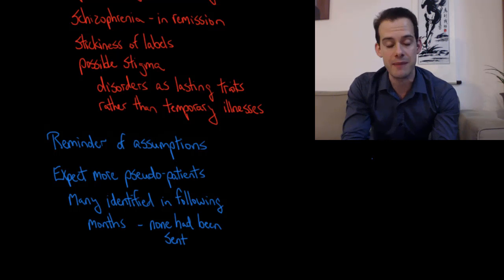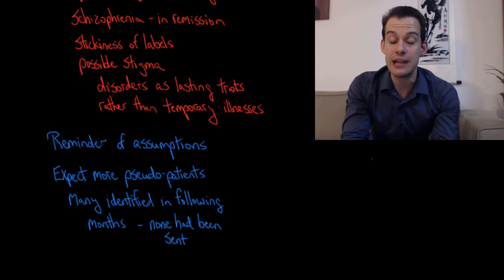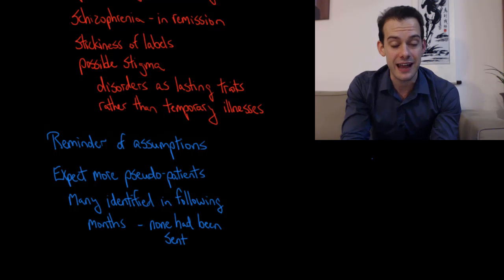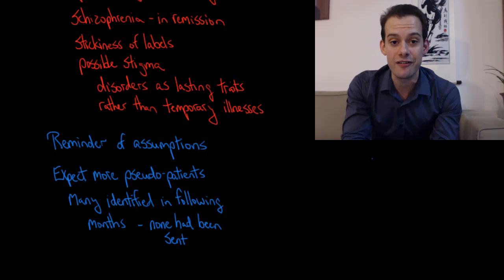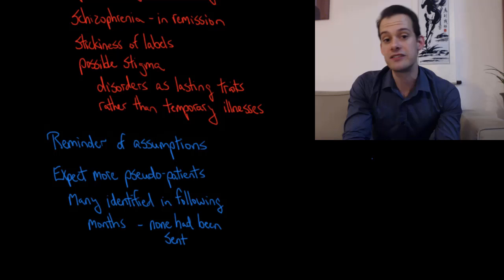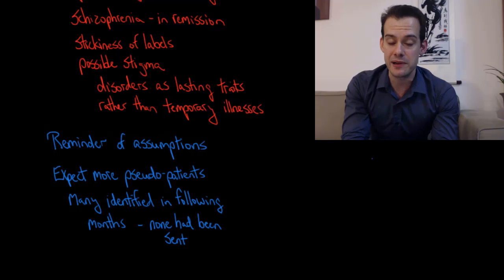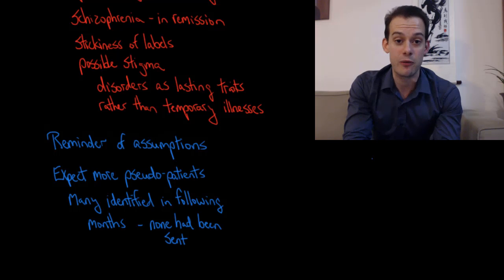What Rosenhan's study helps to demonstrate is a number of the assumptions that people make when it comes to mental illness, assumptions that are made even by psychiatrists themselves. After the study was published, Rosenhan told these institutions that they could expect he would send more pseudo patients in the future. They should be on guard for more pseudo patients and be more careful in the diagnoses they're giving out. In the months that followed, many of these institutions reported they had found dozens of pseudo patients that they believed had been sent by Rosenhan. At which point he reported that he had actually not sent any. This shows the opposite problem. Now the assumption was that there were pseudo patients coming in, and so there may have been people who actually were experiencing some symptoms of mental illness who were dismissed by the psychiatrists because they were believed to be faking or pseudo patients sent by Rosenhan, when in fact they weren't.